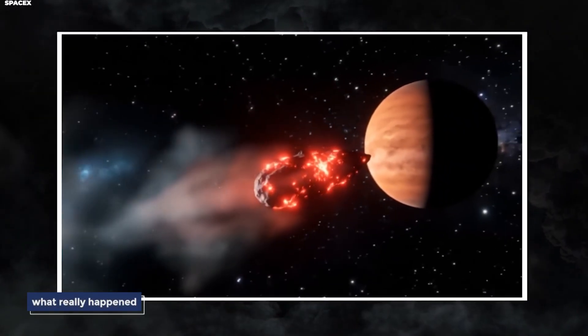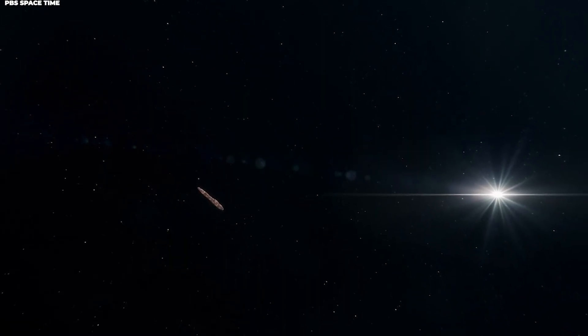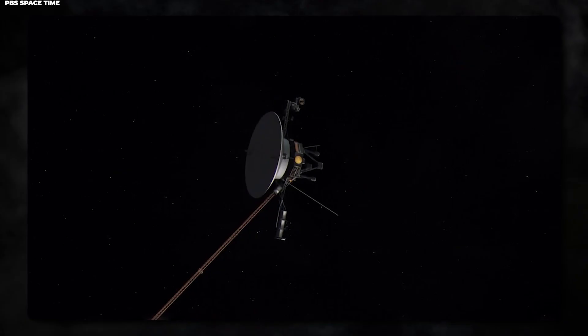This is the story of what really happened when two travelers from different corners of the universe nearly crossed paths. To really appreciate what happened, we first need to understand what Voyager 1 actually is and why it's so special.